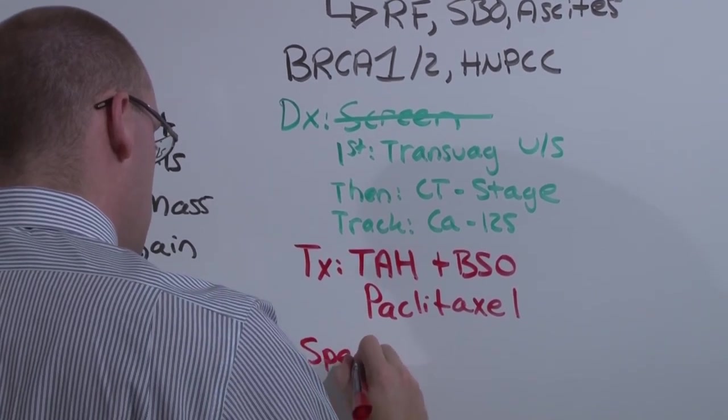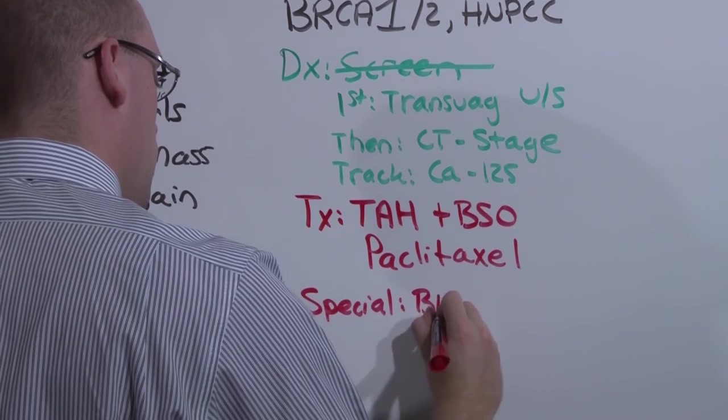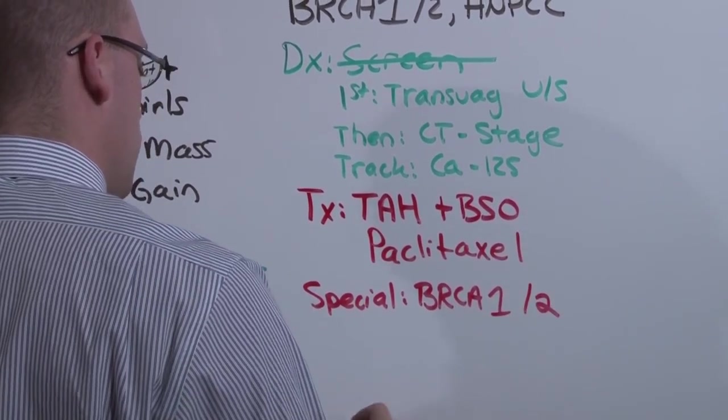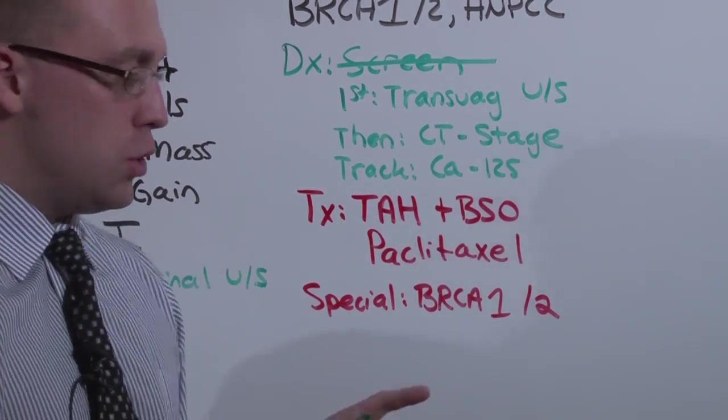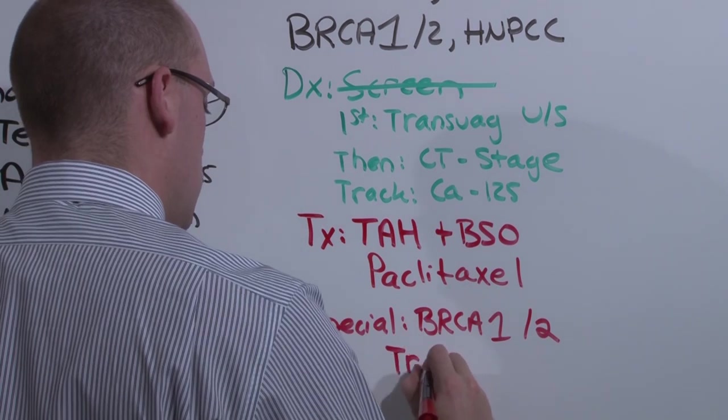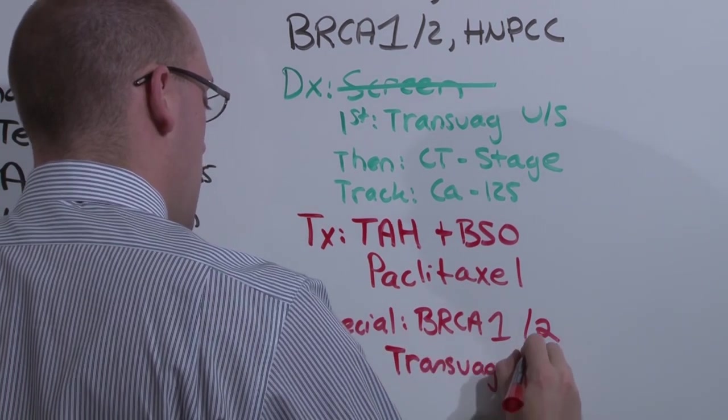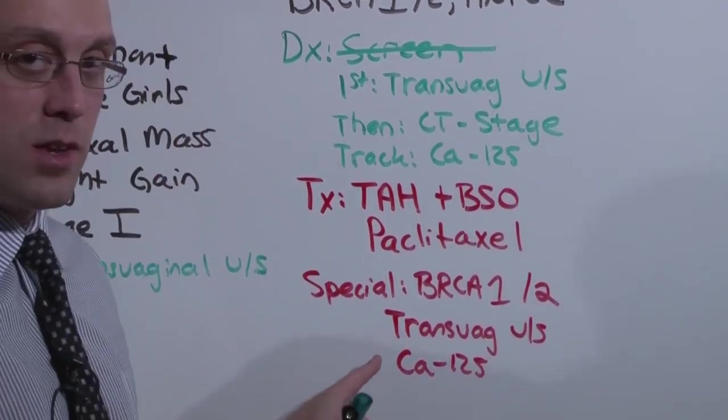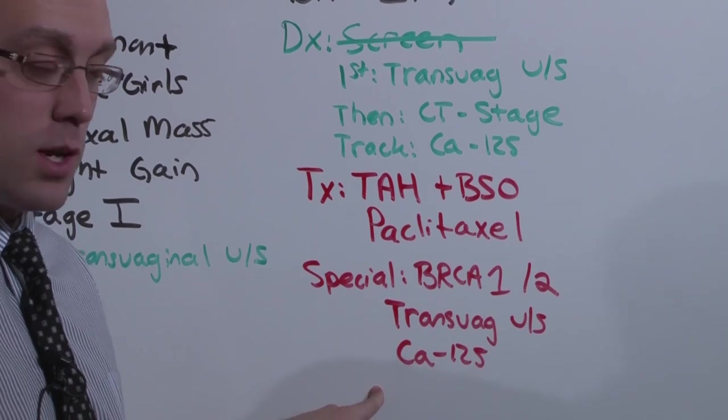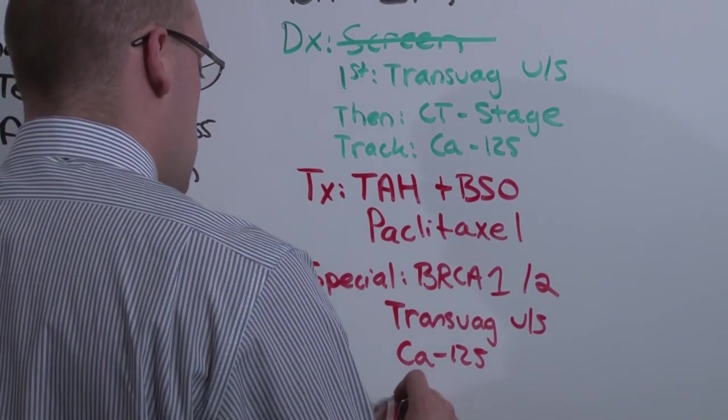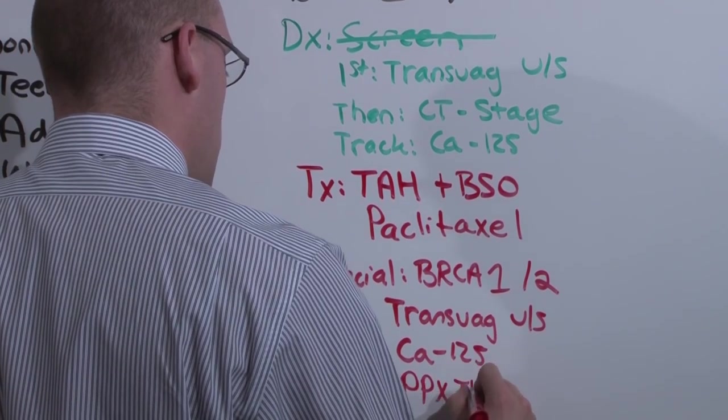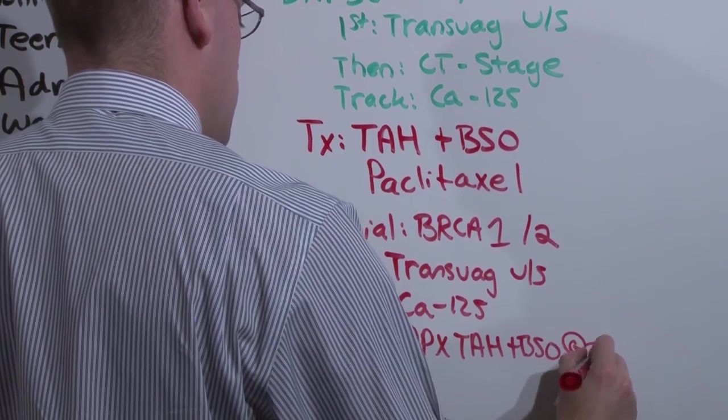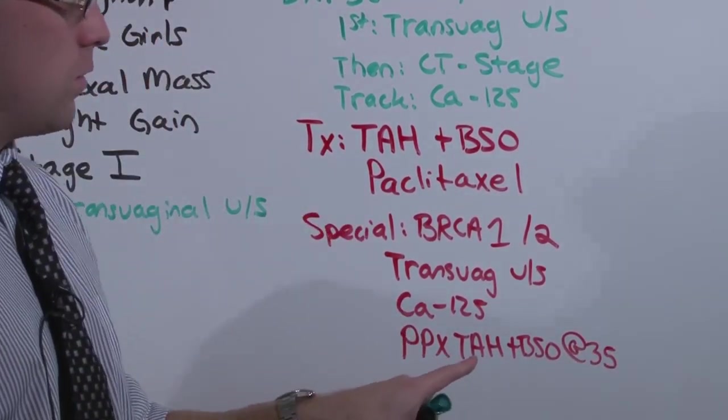And there is a special consideration you need to make. In people who have BRCA1, in particular BRCA1, but you can also justify it in BRCA2, you can screen. You screen these patients annually with a transvaginal ultrasound and with a CA125. And when she is done having kids, and generally because pregnancies starting at age 35 or older don't do very well, you can actually do a prophylactic total abdominal hysterectomy and bilateral salpingo-oophorectomy at age 35. This eliminates the risk of developing a potentially fatal tumor.